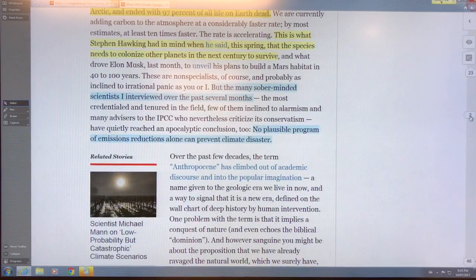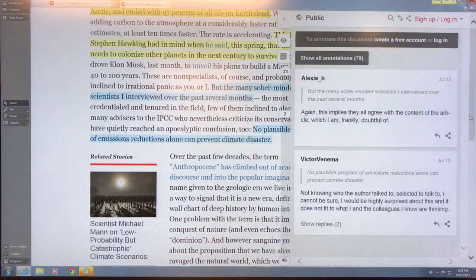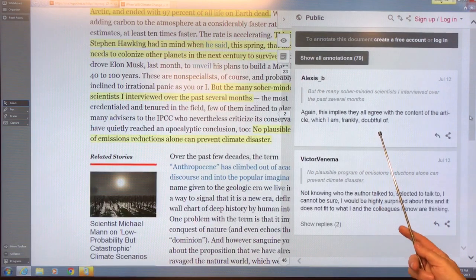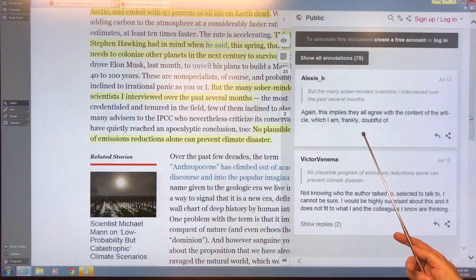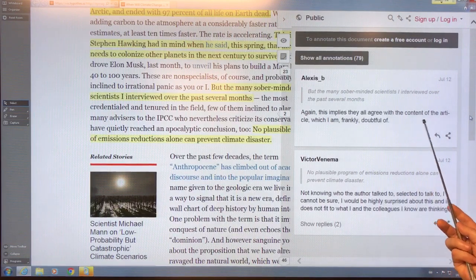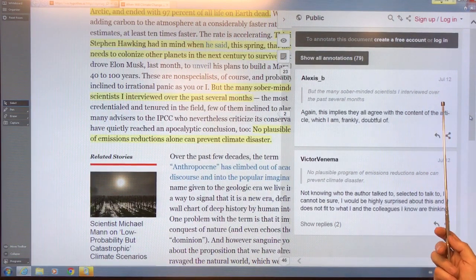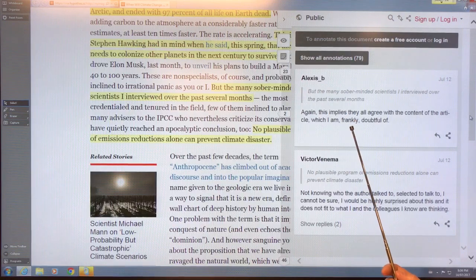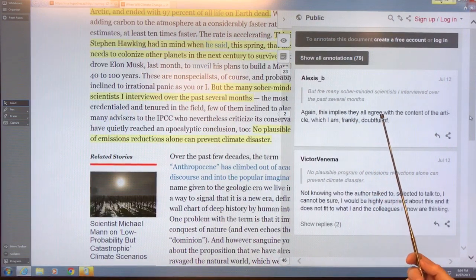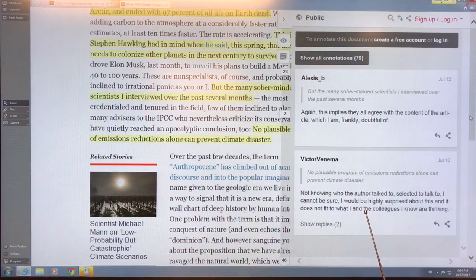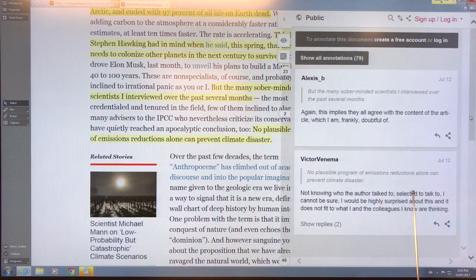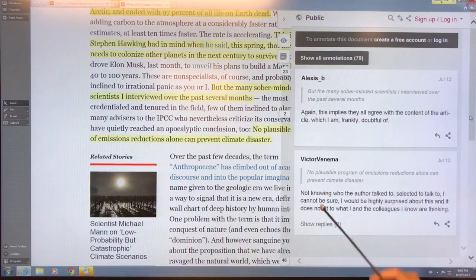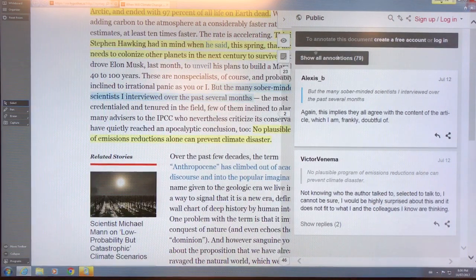Again, this implies that all the scientists agree with the content of the article. Come on, getting 16 scientists to agree with everything in an article, you'd never have an article written. It would be like a paragraph, and then everybody would disagree on stuff. I would be highly surprised about this. What's he supposed to do, talk about all of these scientists that he had beers with that were saying 'oh, we're completely screwed'? I don't know, it's private conversations.